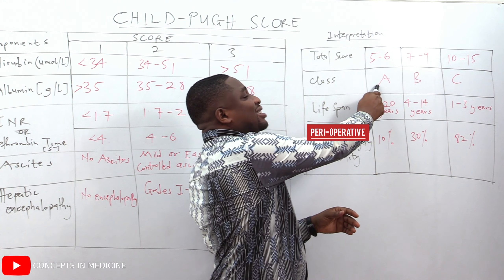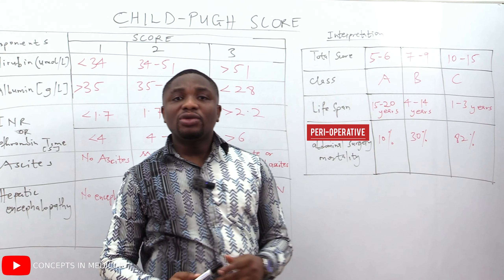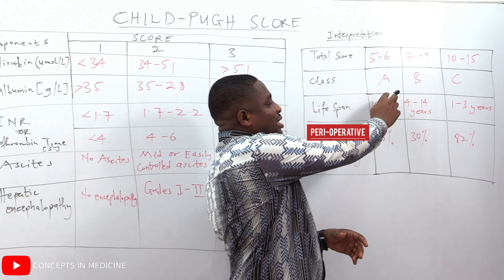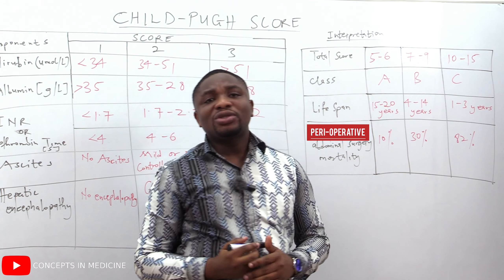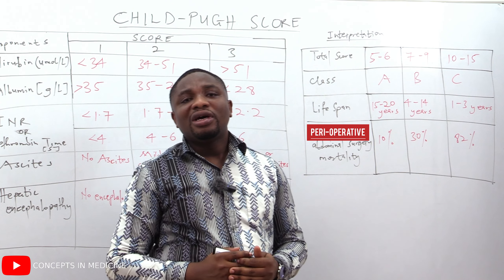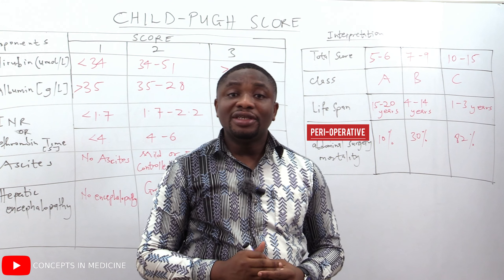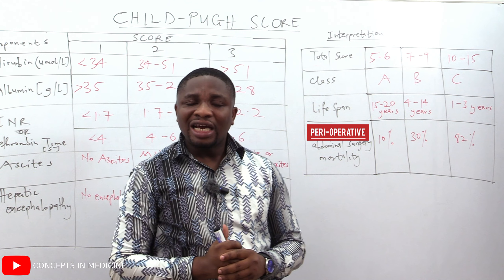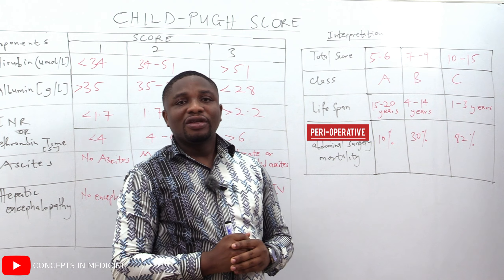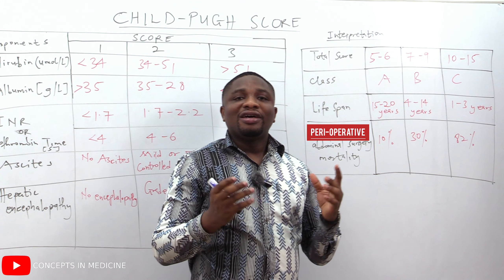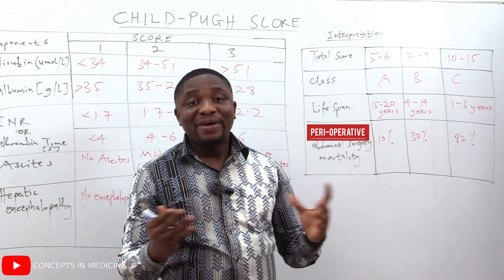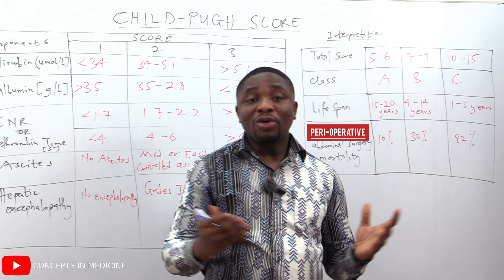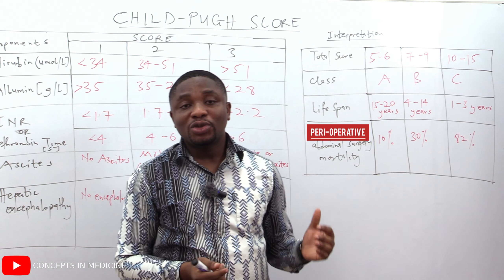The next component is ascites. If there is no ascites, a score of one. If there is well-controlled or mild ascites, a score of two. If there is moderate or poorly controlled ascites, a score of three.